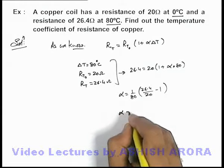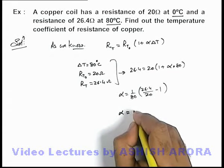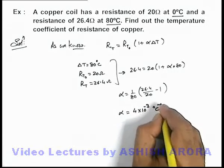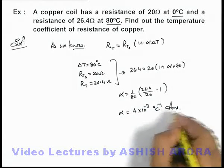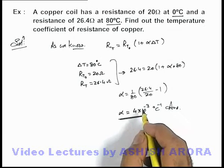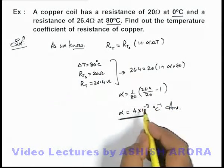On further simplifying, we are getting the value of α is equal to 4 × 10^(-3) per degree centigrade. That will be the answer to the problem—that is, the temperature coefficient of resistance for the copper material.